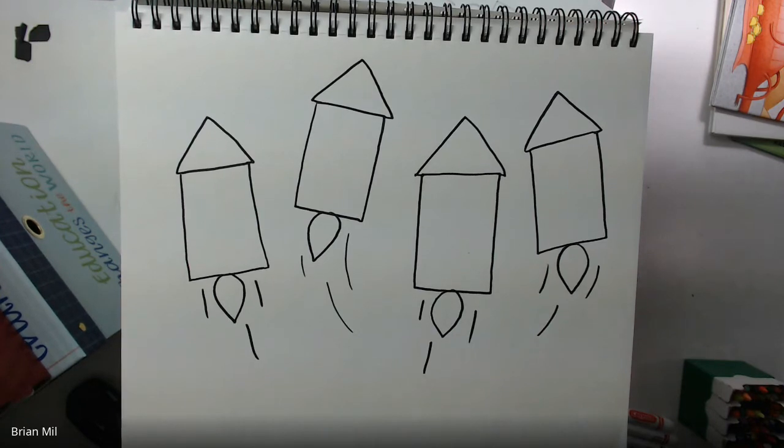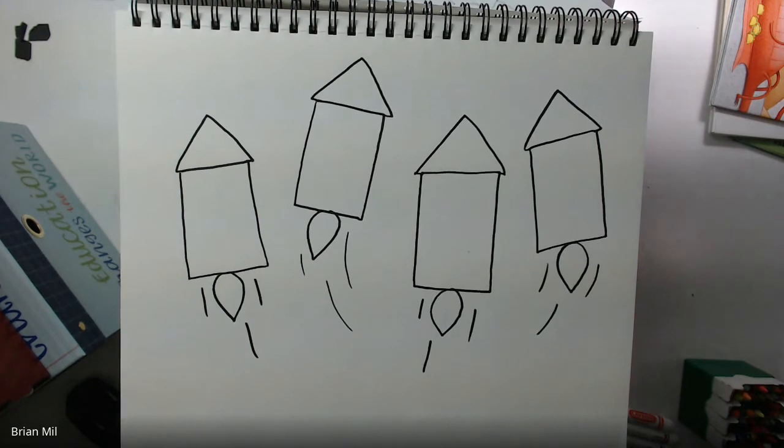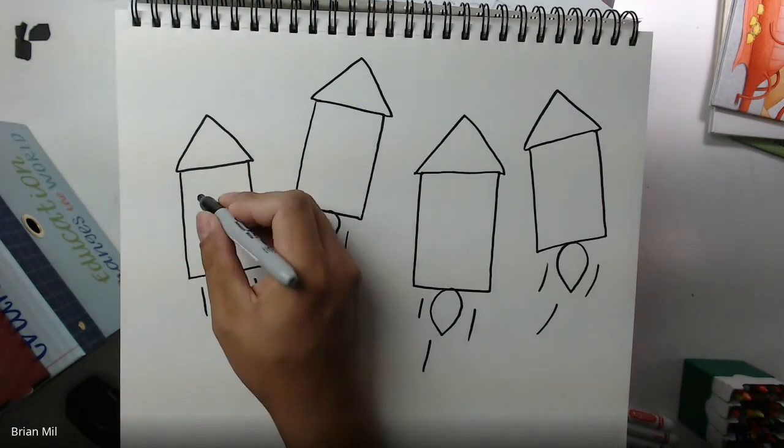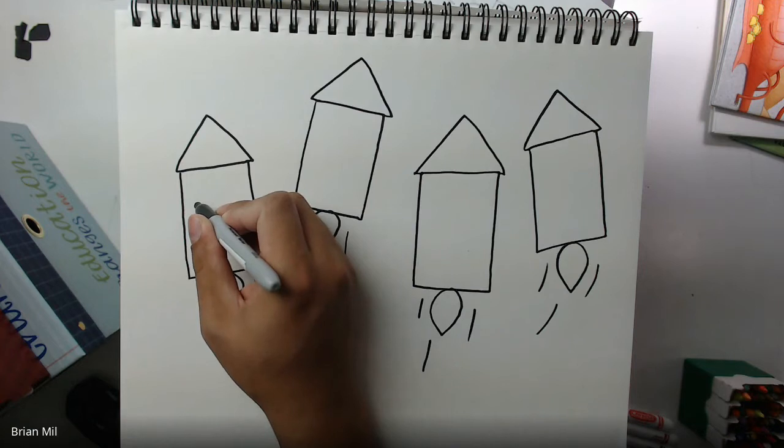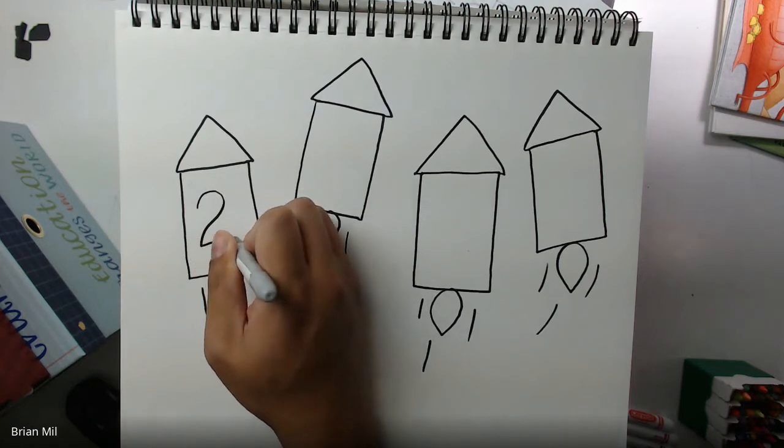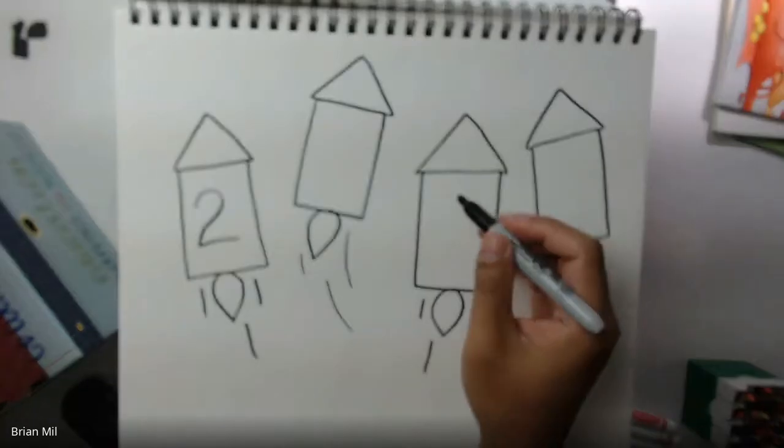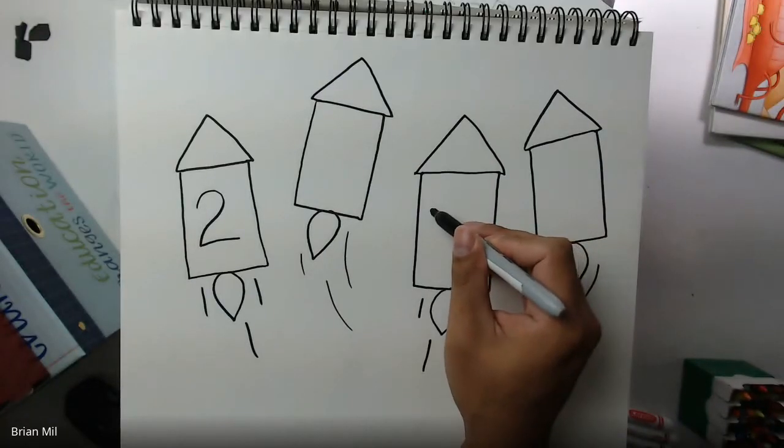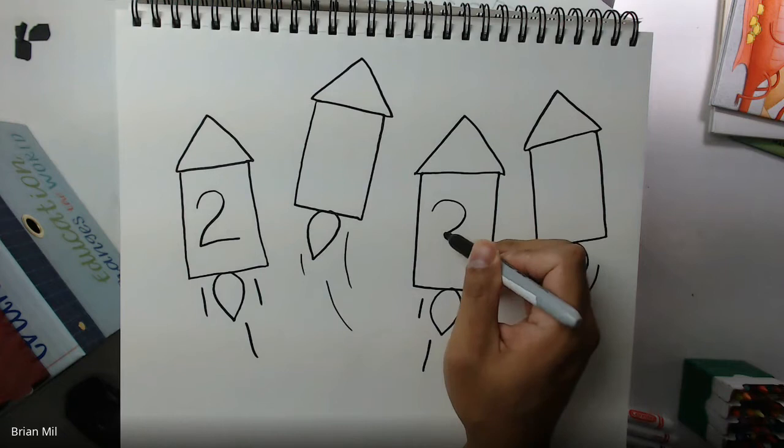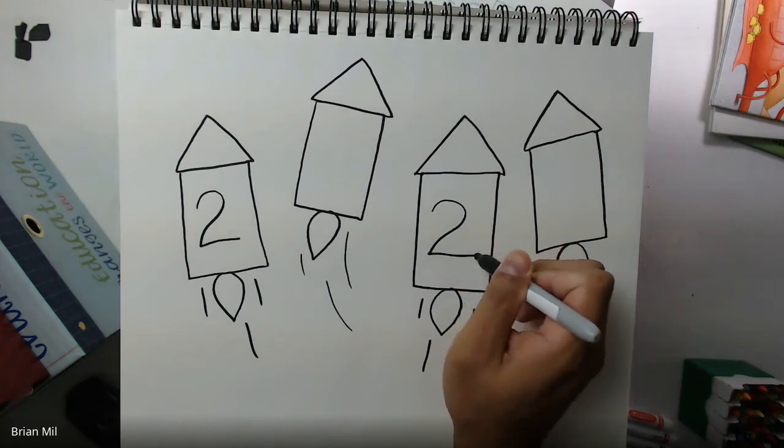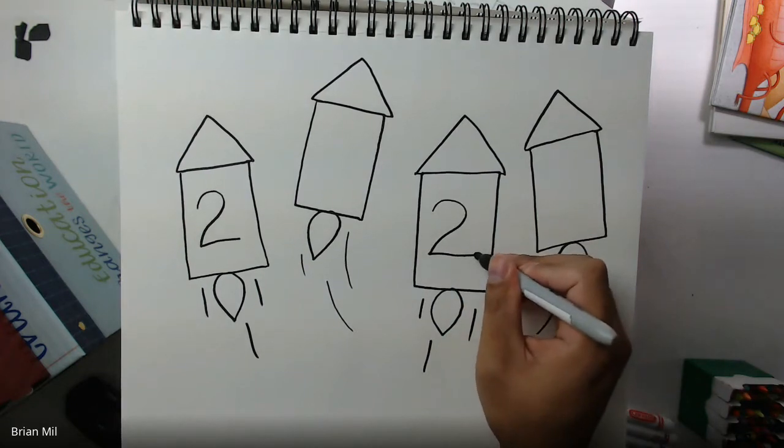Alright, next step we're gonna add the dates to each of these rockets. So we're just gonna need two number twos for the second and third rocket. So I'm gonna draw a number two over here. And if you want to make it into a blocky number I'm gonna show you guys how to do that with the number two real quick. All you gotta do is go to the back of the two, go up, and then just kind of go back where you came from but try to follow it at a good distance.